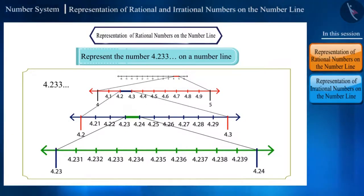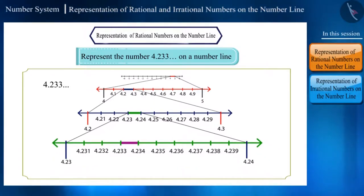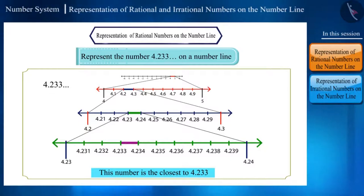So the given number lies between 4.233 and 4.234. If we notice the process, as we are moving ahead and dividing the parts, we are getting closer to the given numbers. Here we can say that, though we cannot accurately locate the given number on the number line, we can still represent its closest value.